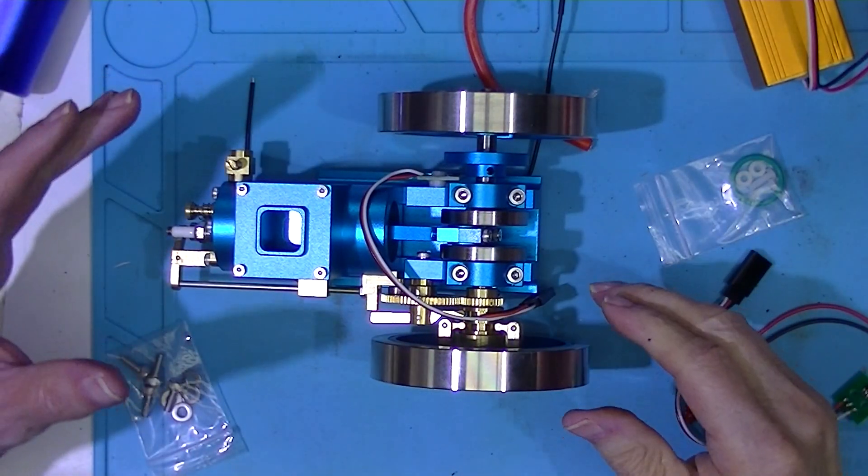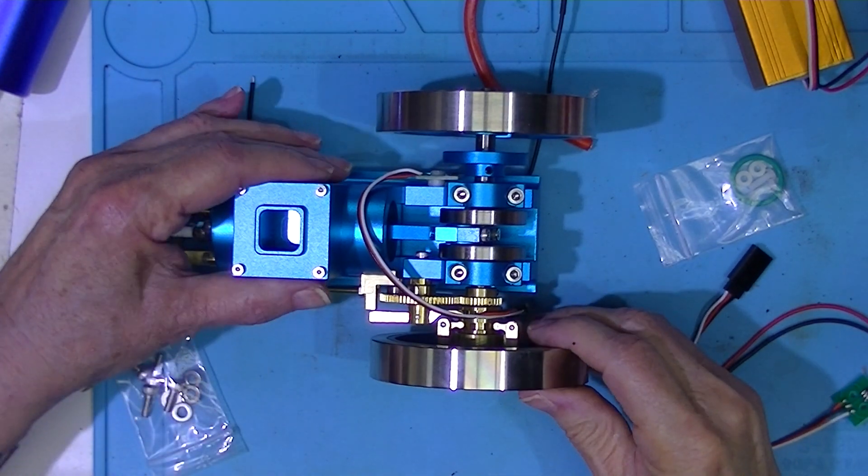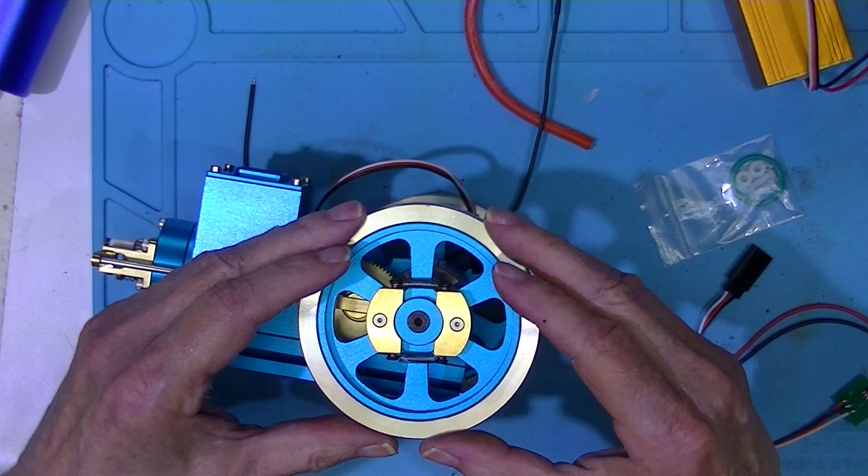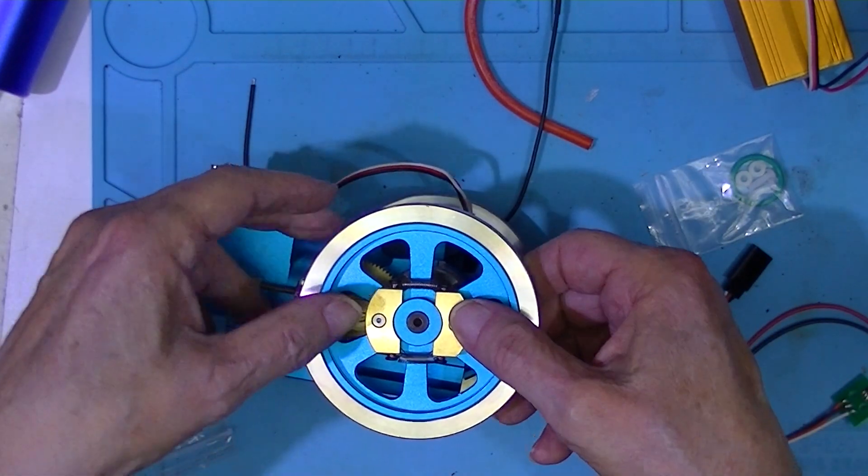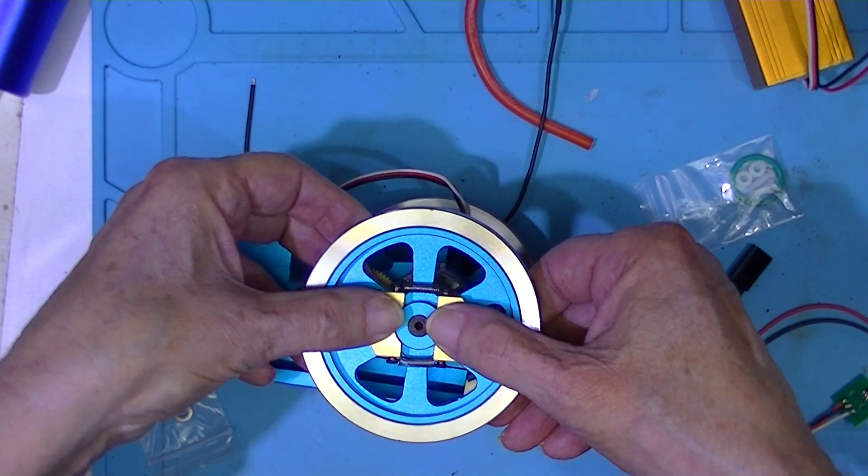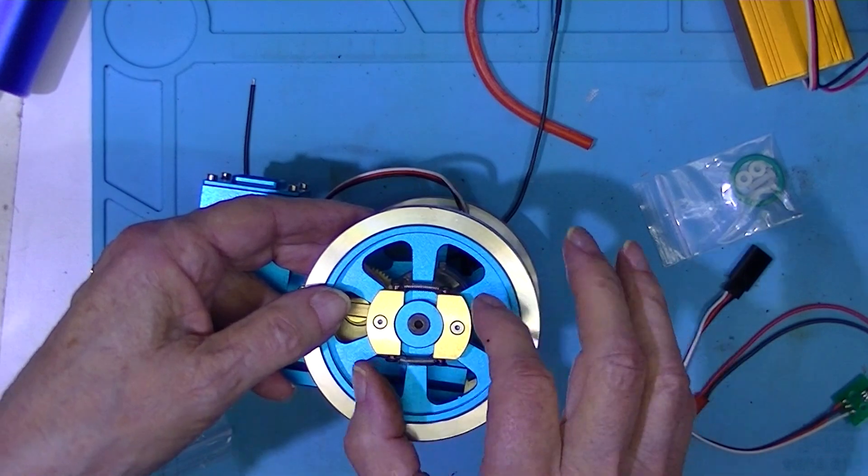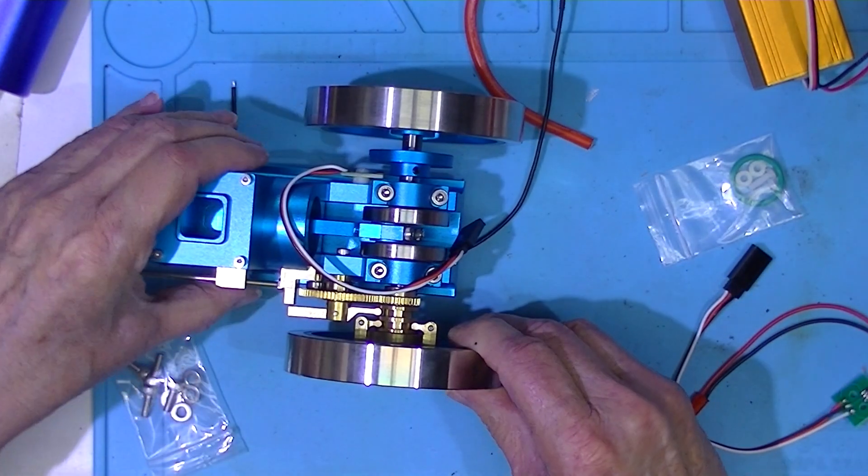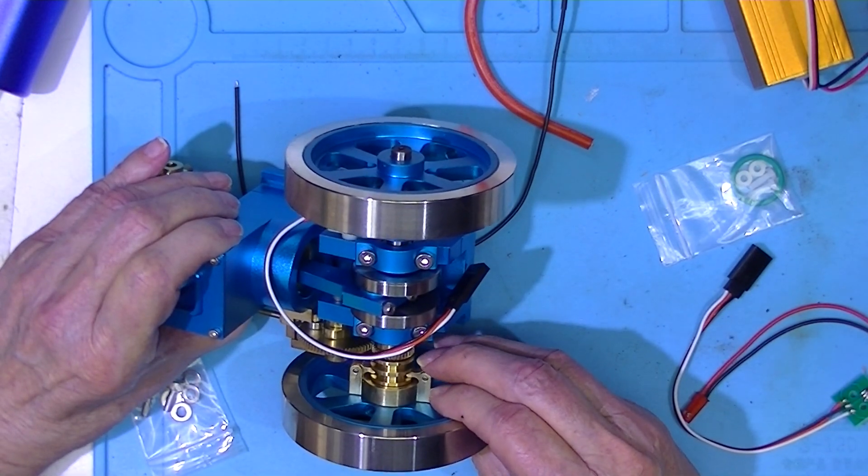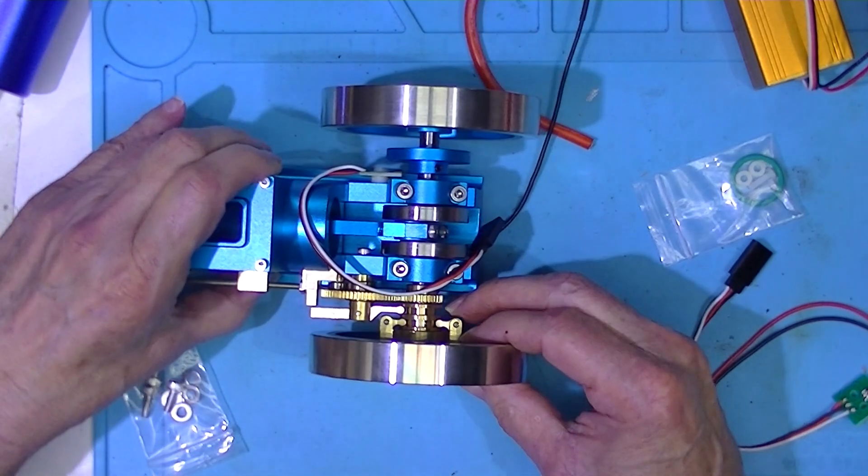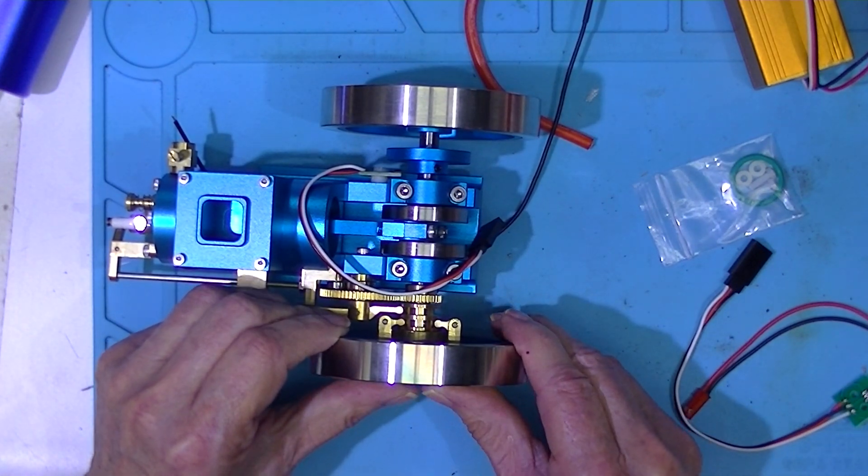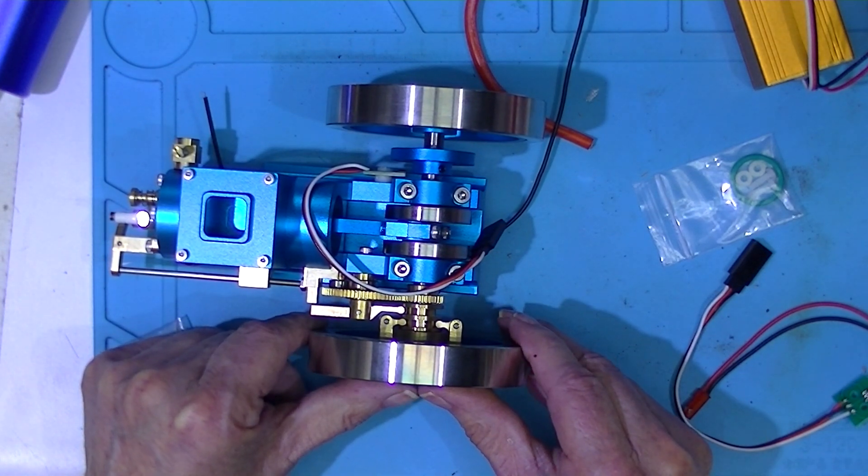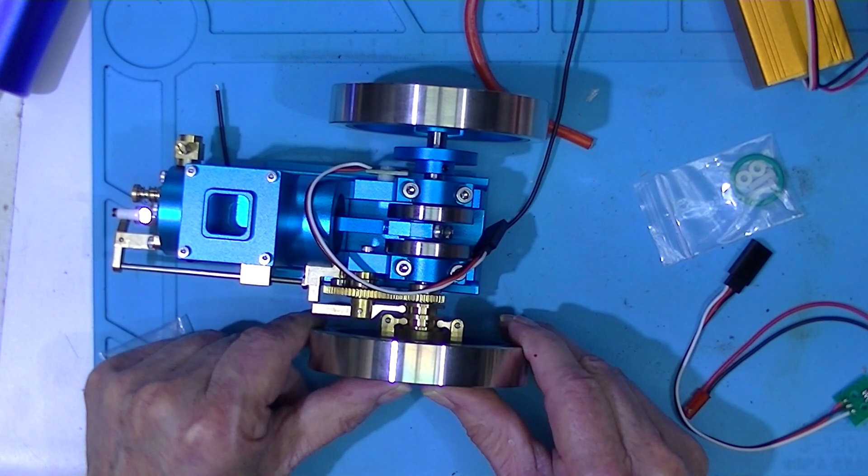This is by design an intermittent ignition engine. It always fires at the same speed. These weights mounted around the flywheel actually move. Centrifugally, they are forced out by centrifugal force. They operate these little camming devices such that when they're out, they lock the exhaust valve.